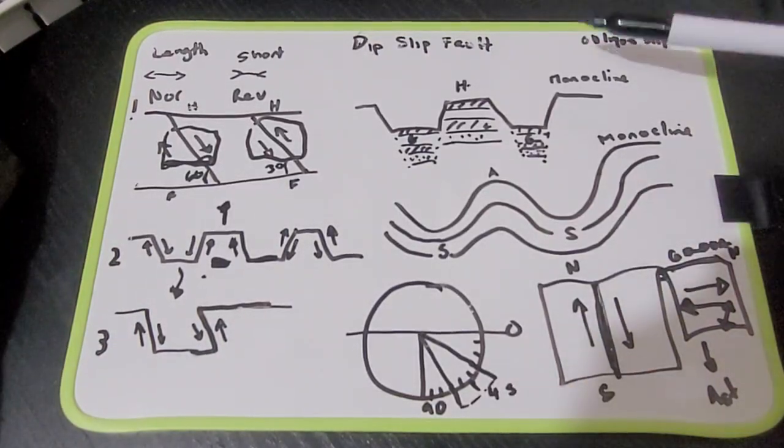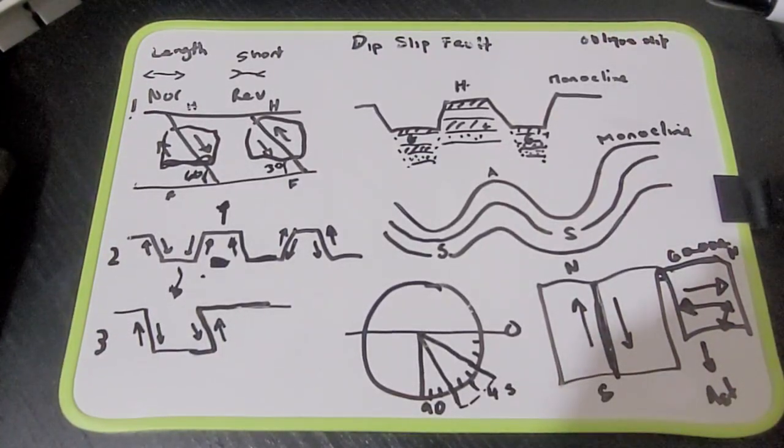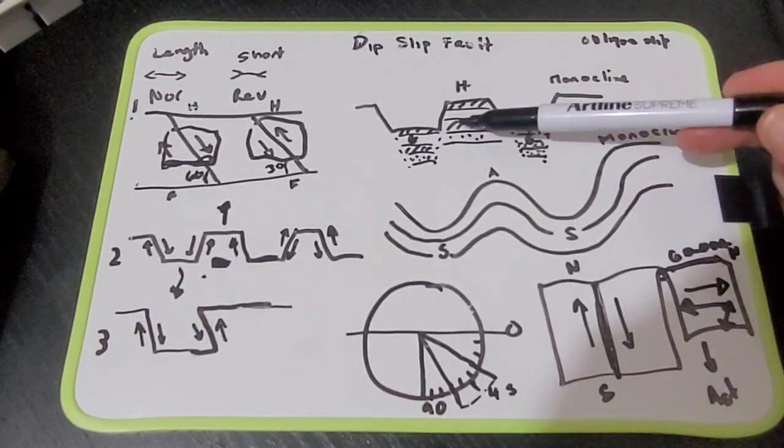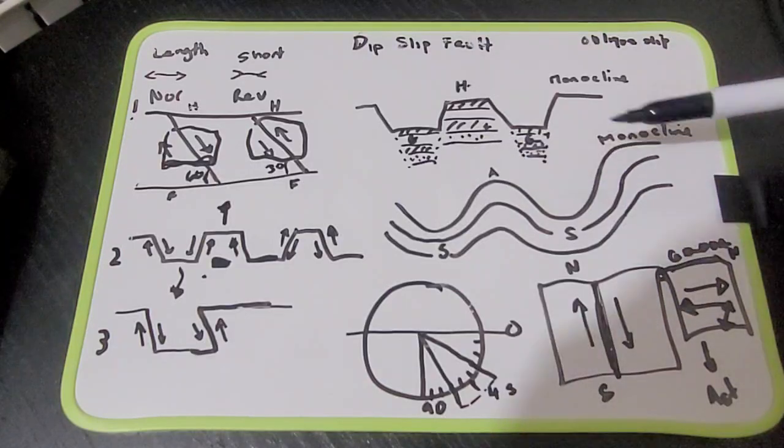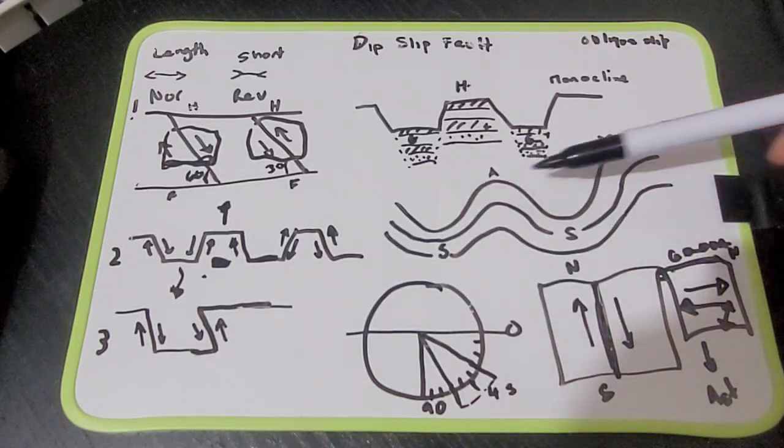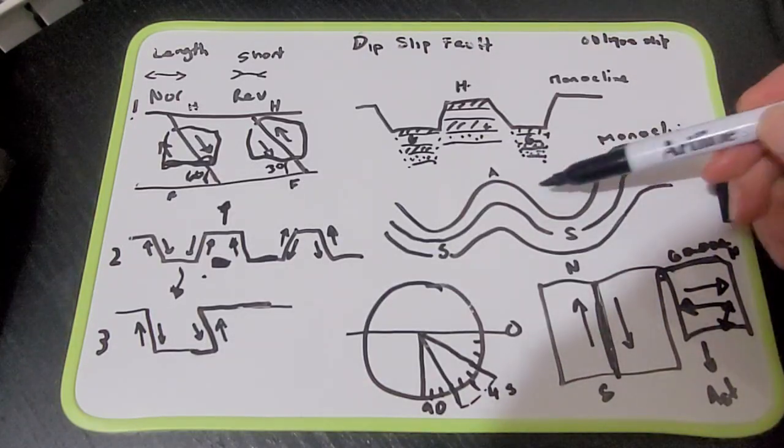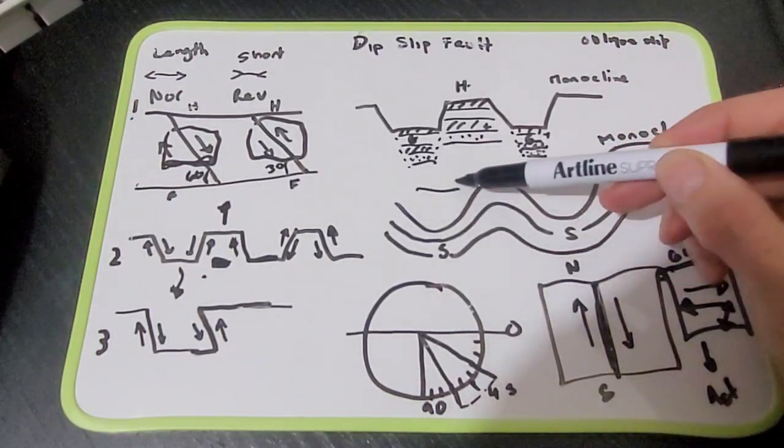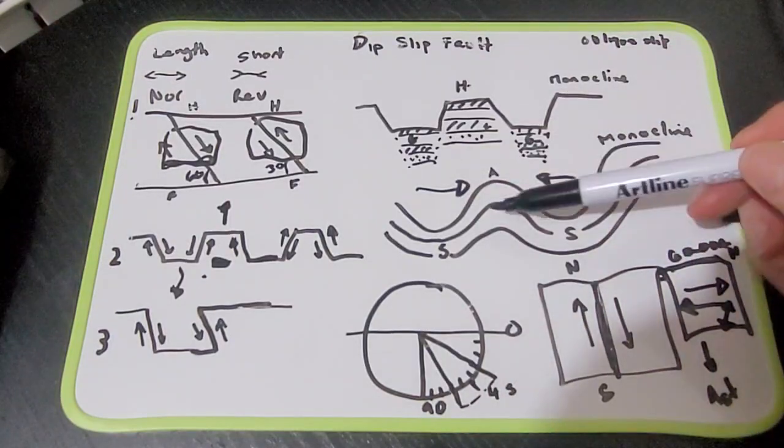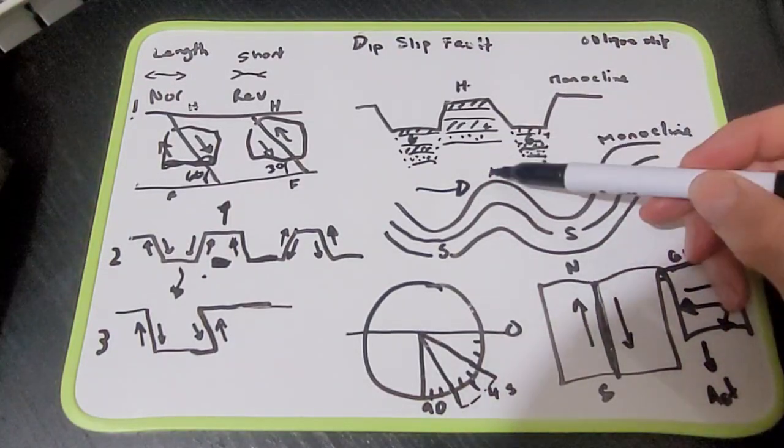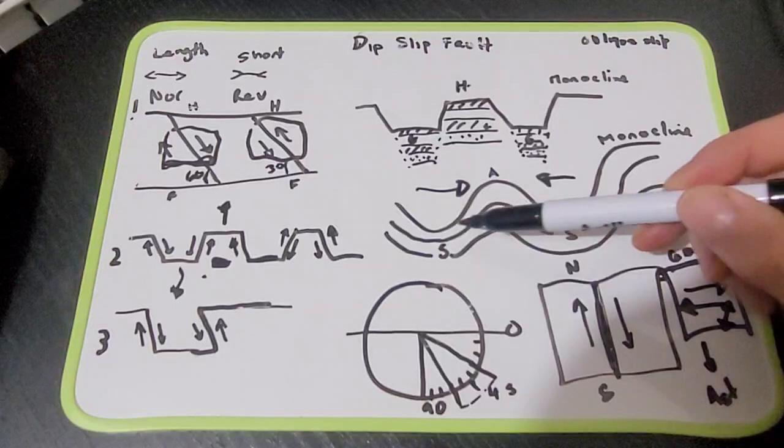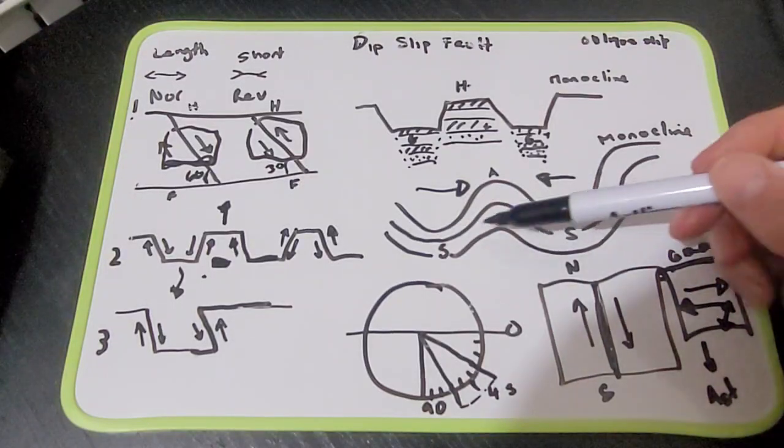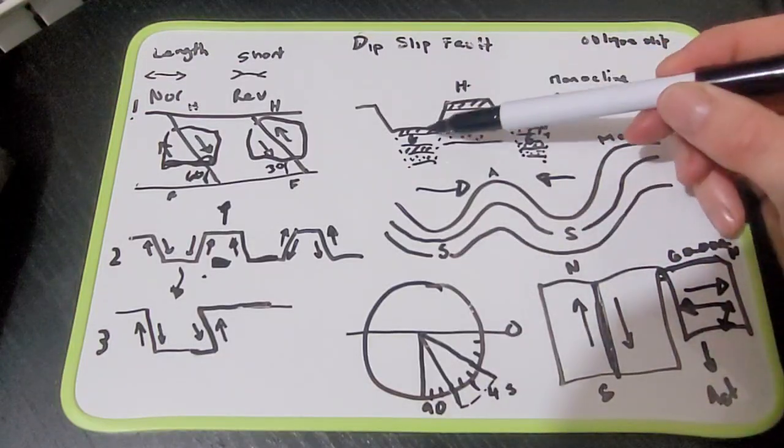Now when you are looking at horst and grubens, you can't mistake them for compressional features. So this is where the actual land is being compressed during orogeny. So this is mountain building. You've got anticlines and synclines and you can see that the strata is folded, it's not faulted. That's where horst and grubens come in.